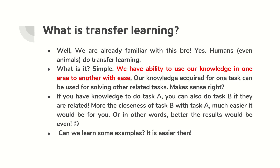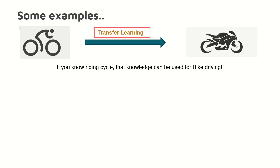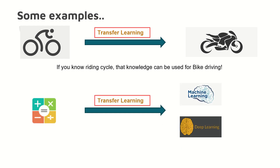You have got two tasks: task A and task B. You have done task A, and if you can use all or part of what you learned to do task B as well, that is transfer learning. For example, you know driving a cycle — some features of driving a cycle can be extracted and used towards learning to drive a bike. If you know mathematics, it becomes easier for you to learn machine learning and deep learning. That knowledge can be transferred.